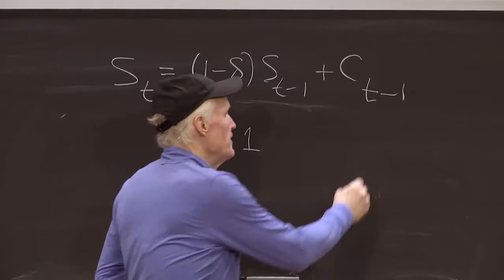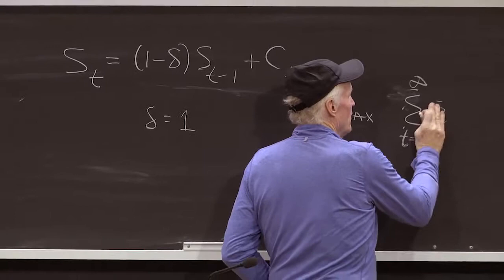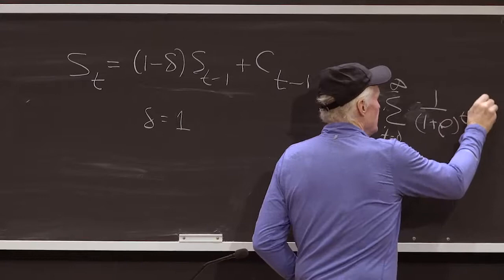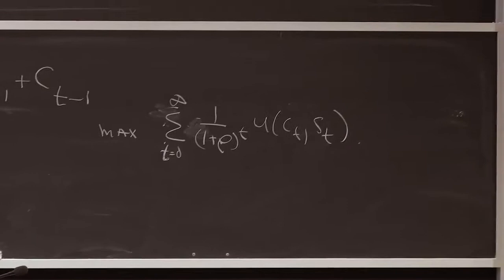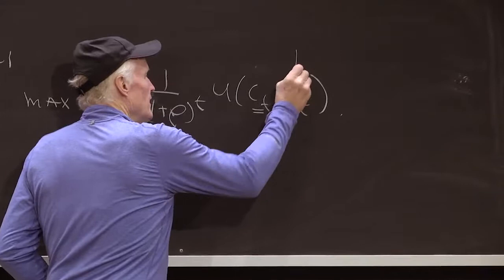And then we think about maximize sum, like discounted sum from t equals 0 to infinity, e to the 1 over 1 plus rho to the t, u of c of t, s of t. So think about that. That's just a standard discounted utility model, time separable utility. And this utility at a given point in time depends on the stock of past consumption.